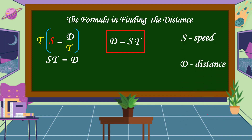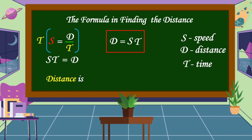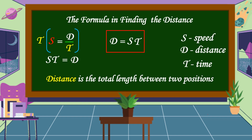Where S is the speed, D is the distance, and T is the time. Distance is the total length between two positions.